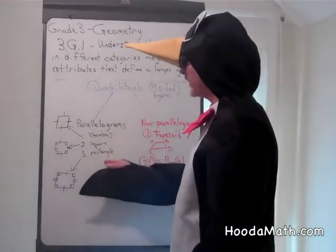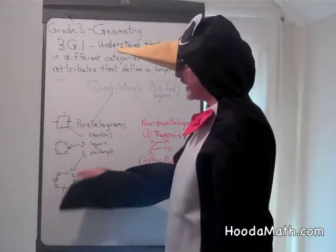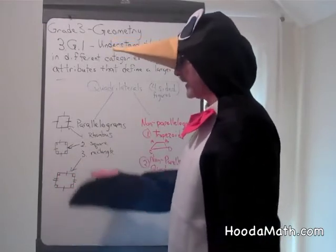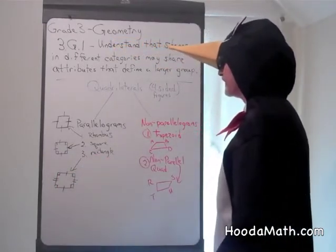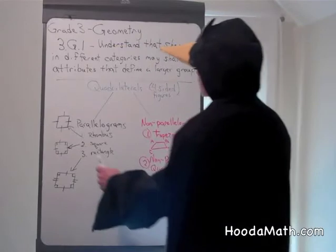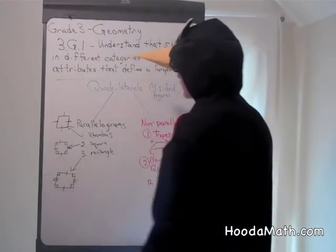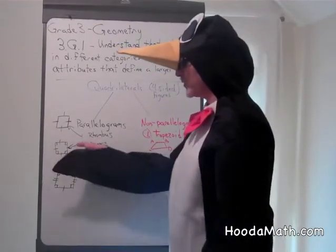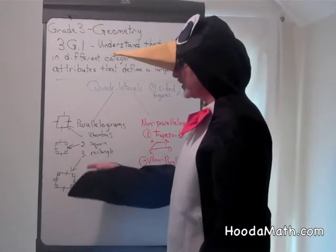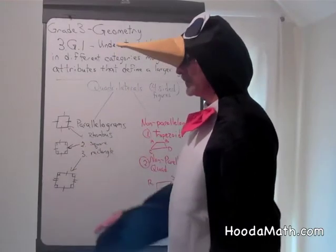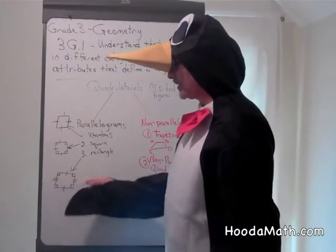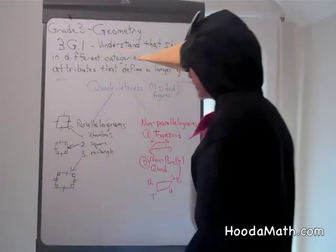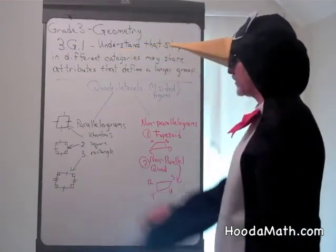A rectangle has opposite sides which are equal and four 90-degree angles. A square is a type of rectangle. Some rectangles are squares, but not all of them — some have unequal sides, but the opposite sides are equal.